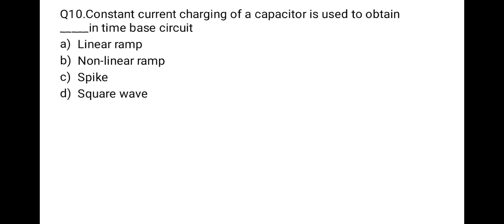The next question: constant current charging of a capacitor is used to obtain what in a time-based circuit? The correct option is linear ramp. Constant current charging of a capacitor is used to obtain a linear ramp in a time-based circuit.